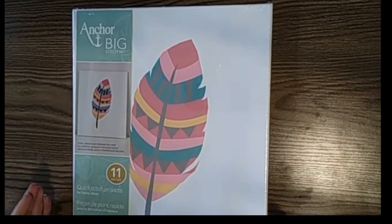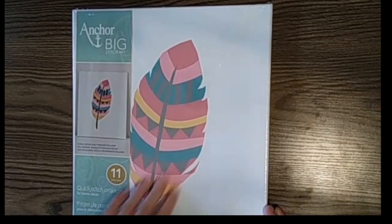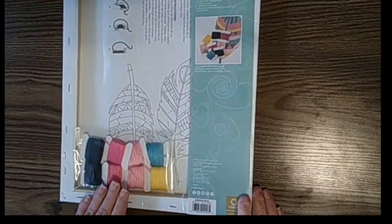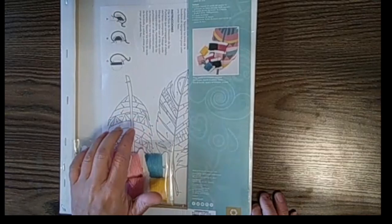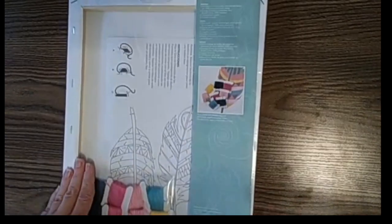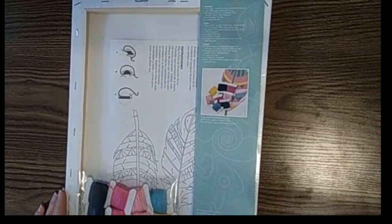At first glance you would think, oh this is to paint color on the canvas. If you turn it around, this is where you see all of the floss. You can also see directions, instructions, and how to do the stitches. Let's open this up.